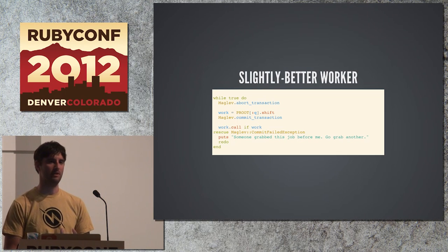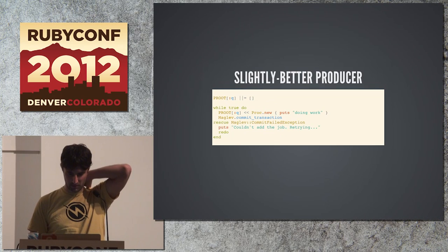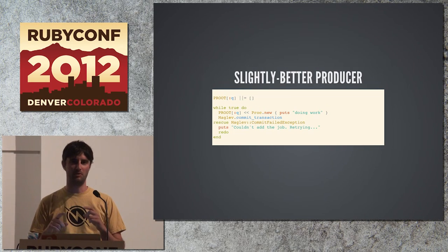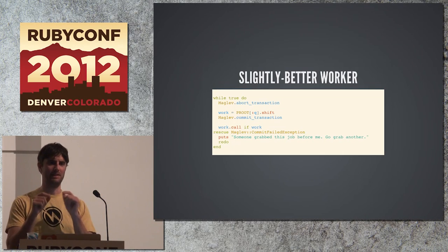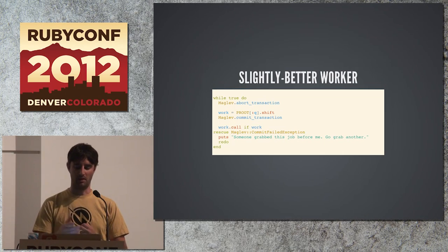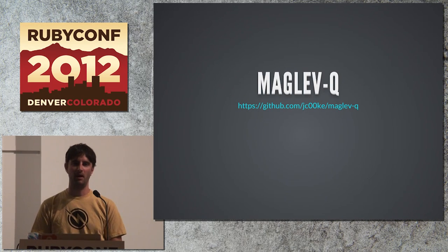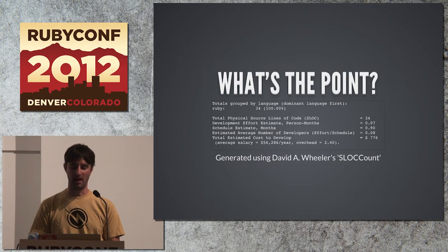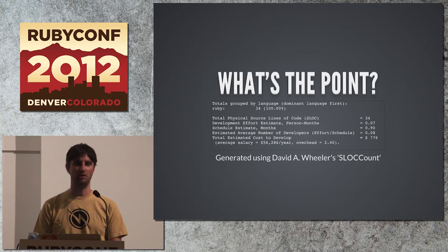On both the producer and worker sides, two VMs might try to append to or pop off that queue array at exactly the same time, causing a failed transaction. The code handles this, and the point of this exercise was that it was about 34 lines of Ruby code — just Ruby code. No tests of course, but it's pretty simple to understand.